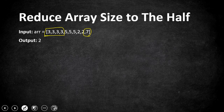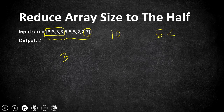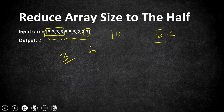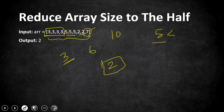If we pick 3, the array size is 10, and we need to reduce it to 5 or less. Picking 3 reduces the size to 6, so we need to pick one more element to get to 5 or less. It can be 7, 2, or 5. In total we only need to pick two elements, so the output is 2.